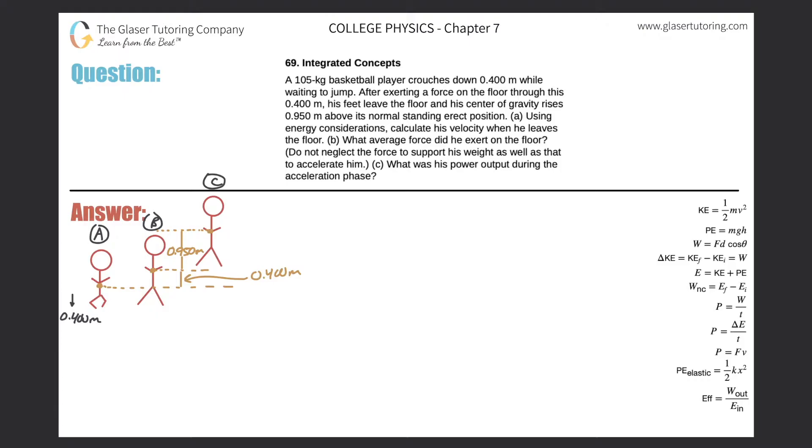Number 69, Integrated Concepts. A 105 kilogram basketball player crouches down 0.4 meters while waiting to jump. After exerting a force on the floor through this 0.4 meters, his feet leave the floor and his center of gravity rises 0.95 meters above its normal standing erect position. Letter A: Using energy considerations, calculate his velocity when he leaves the floor.